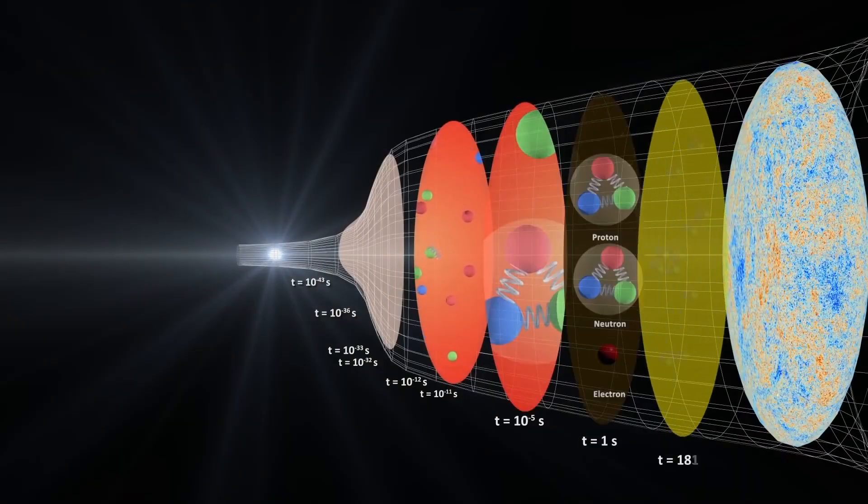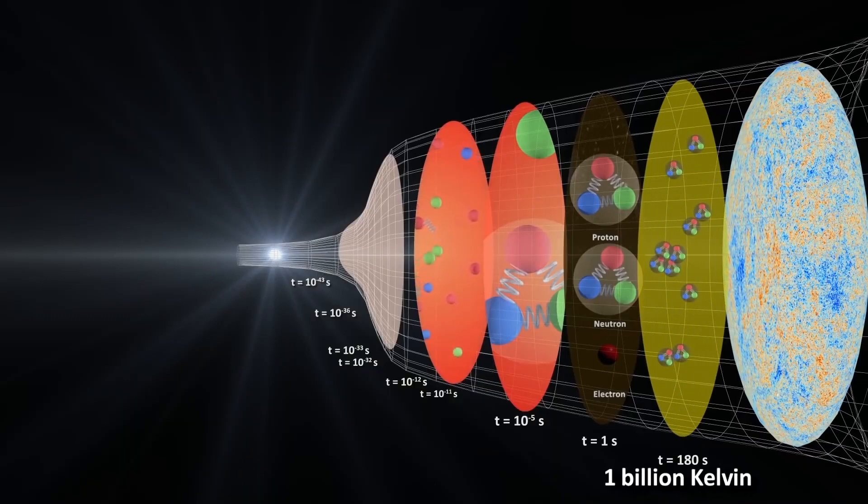Inside each individual bubble where inflation comes to an end, the ball rolling down the hill into the valley will oscillate at the bottom, which converts field energy, or energy inherent to space, into particles—a process known as cosmic reheating. The fact that there's an upper limit to the temperature achieved during the hot Big Bang, a temperature much lower than the Planck temperature, is a further piece of evidence in favor of inflation and against extrapolating the Big Bang back to arbitrary temperatures, densities, and energies.